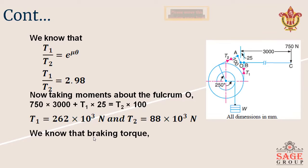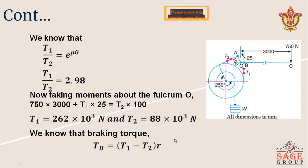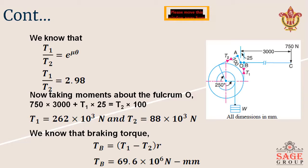The braking torque Tb equals T1 minus T2, multiplied by R. Substituting the values, the braking torque Tb equals 69.6 into 10 to the power 6 Newton-mm.